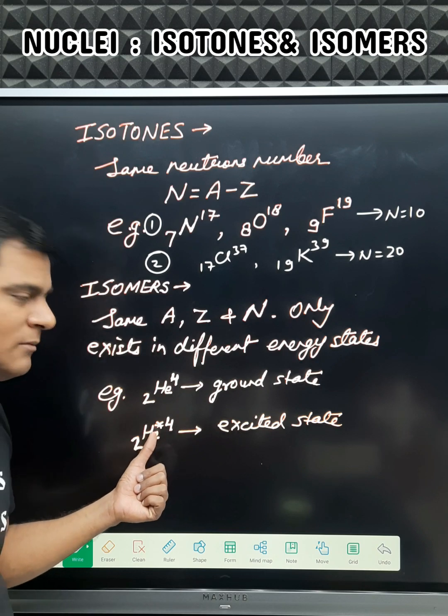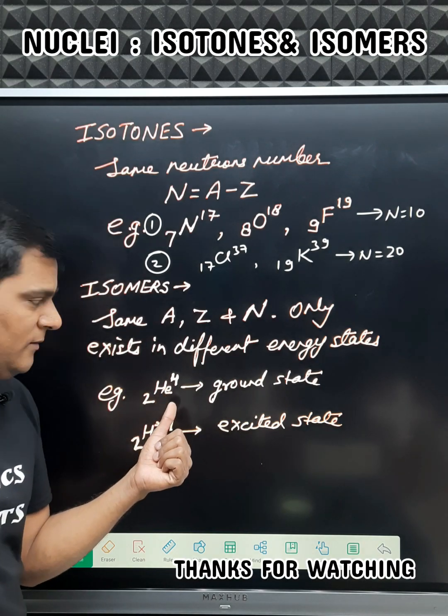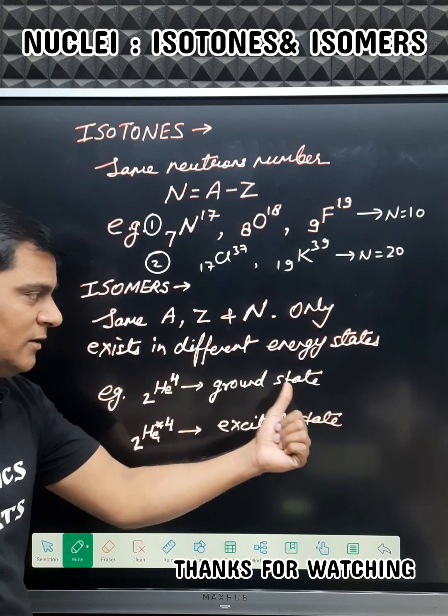So excited state nuclei is written by star and ground state nuclei is without star. So for example, 2 He 4 is in ground state.